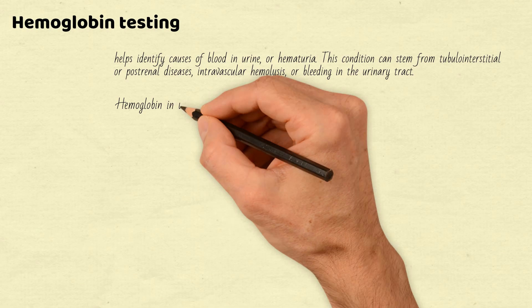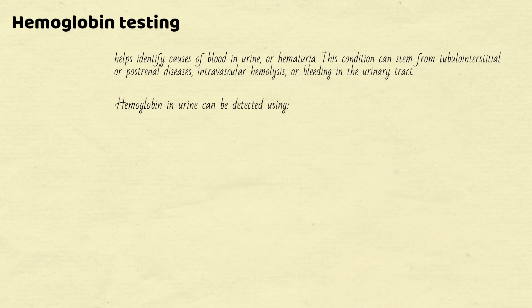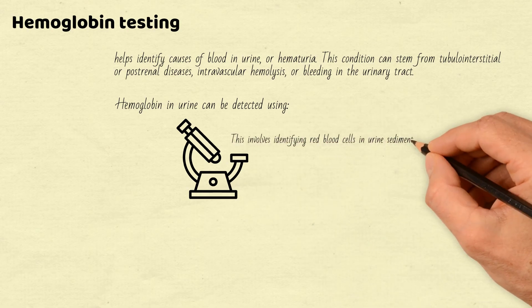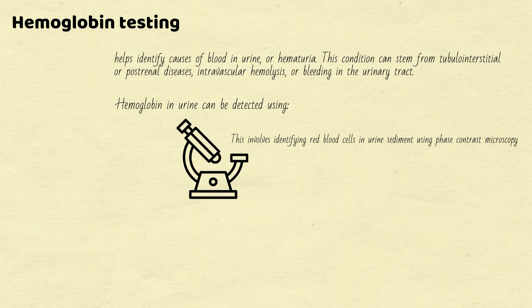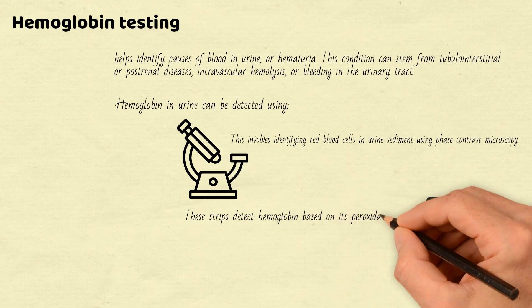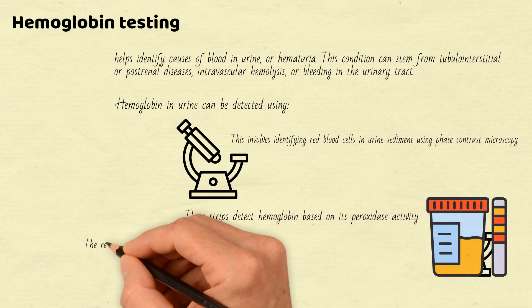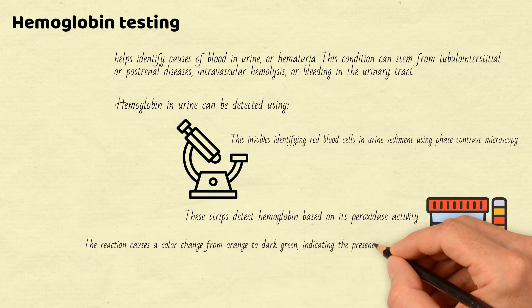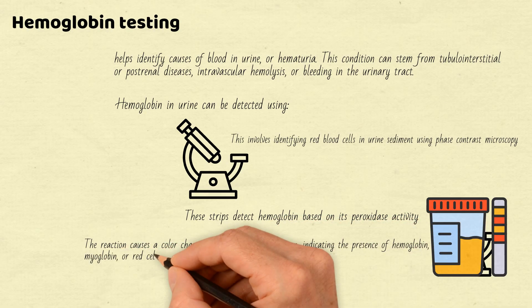Hemoglobin in urine can be detected using: 1. Microscopic examination. This involves identifying red blood cells in urine sediment using phase contrast microscopy. 2. Reagent strip testing. These strips detect hemoglobin based on its peroxidase activity. The reaction causes a color change from orange to dark green, indicating the presence of hemoglobin, myoglobin, or red cells.